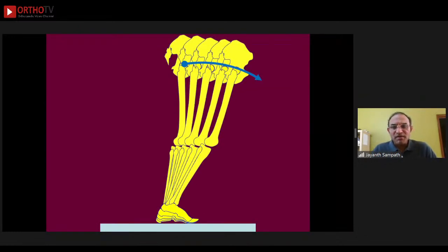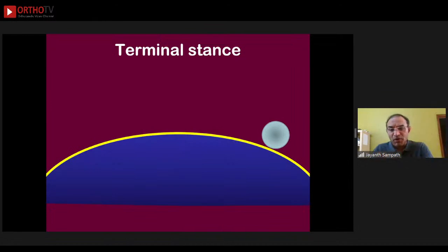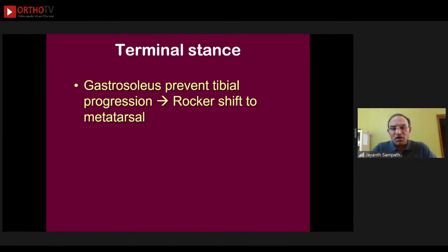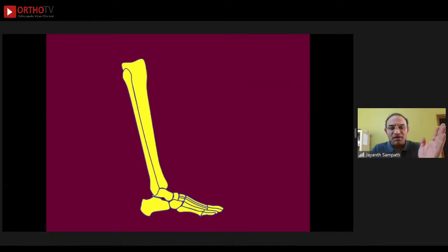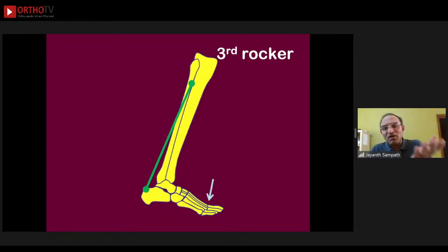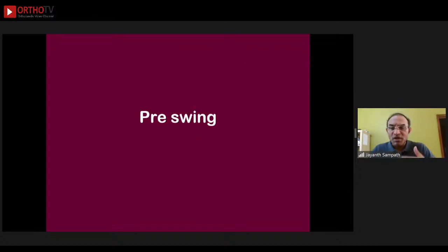Moving on to terminal stance: here the body is prepared to get the foot off the ground and move into swing phase. The center of mass has reached the zenith and is moving forwards, going down to its lowest point called the nadir. The gastrosoleus is still working to prevent further forward progression of the tibia, so the rocker shifts from the tibia to the metatarsal — a smooth progression from second rocker to third rocker of gait.